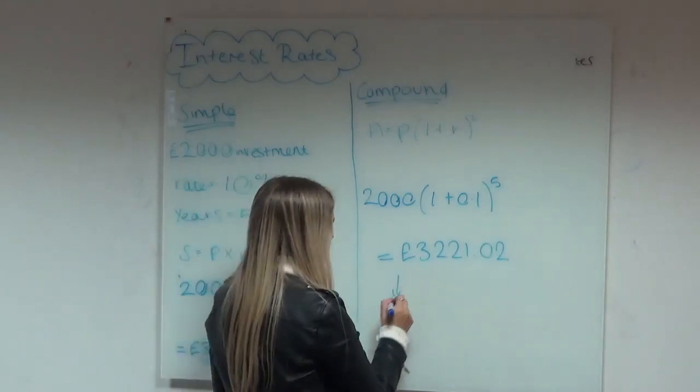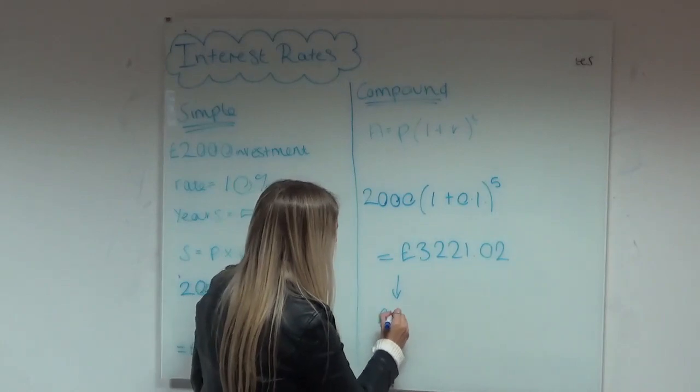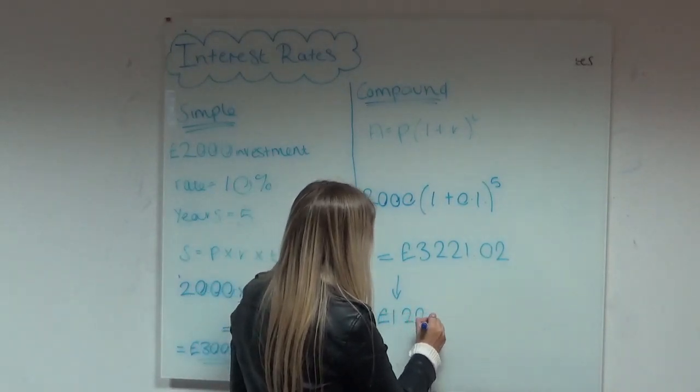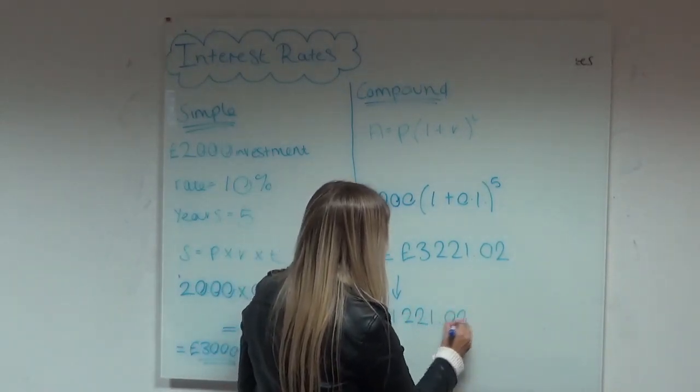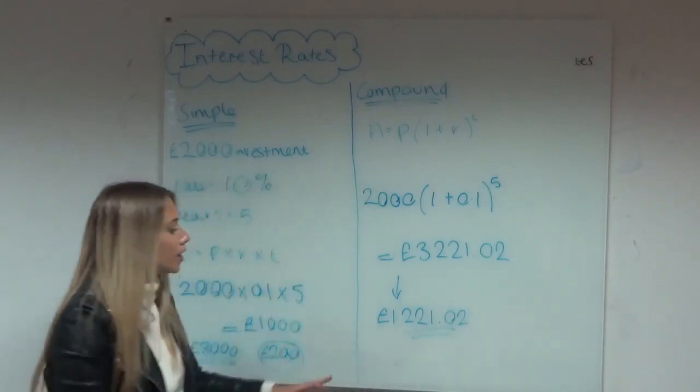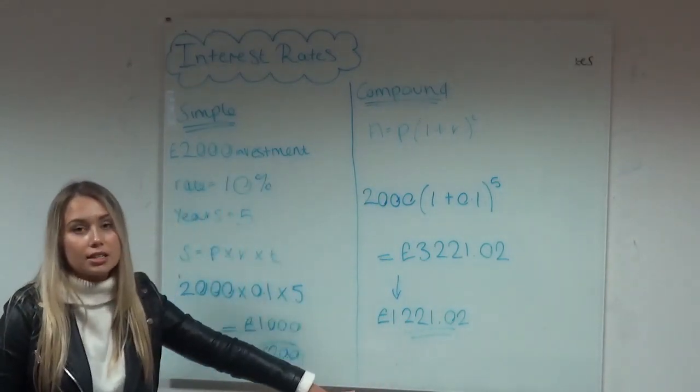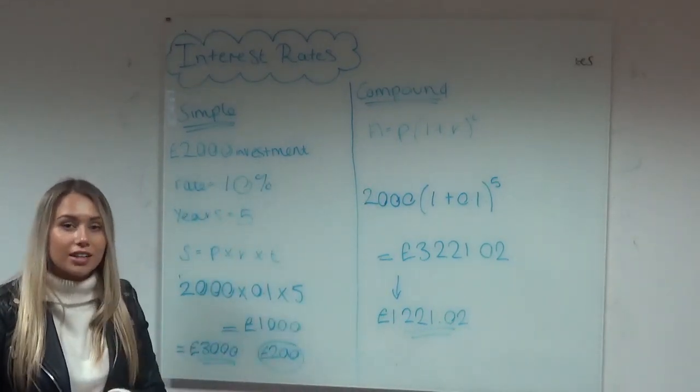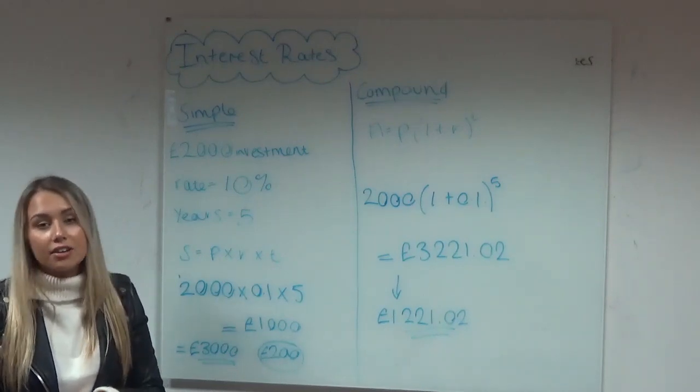So we can see there's a difference between these two of £1,221. So you can see that more interest is earned with compound interest as the interest you earn each year is reinvested and then the interest is calculated from this.